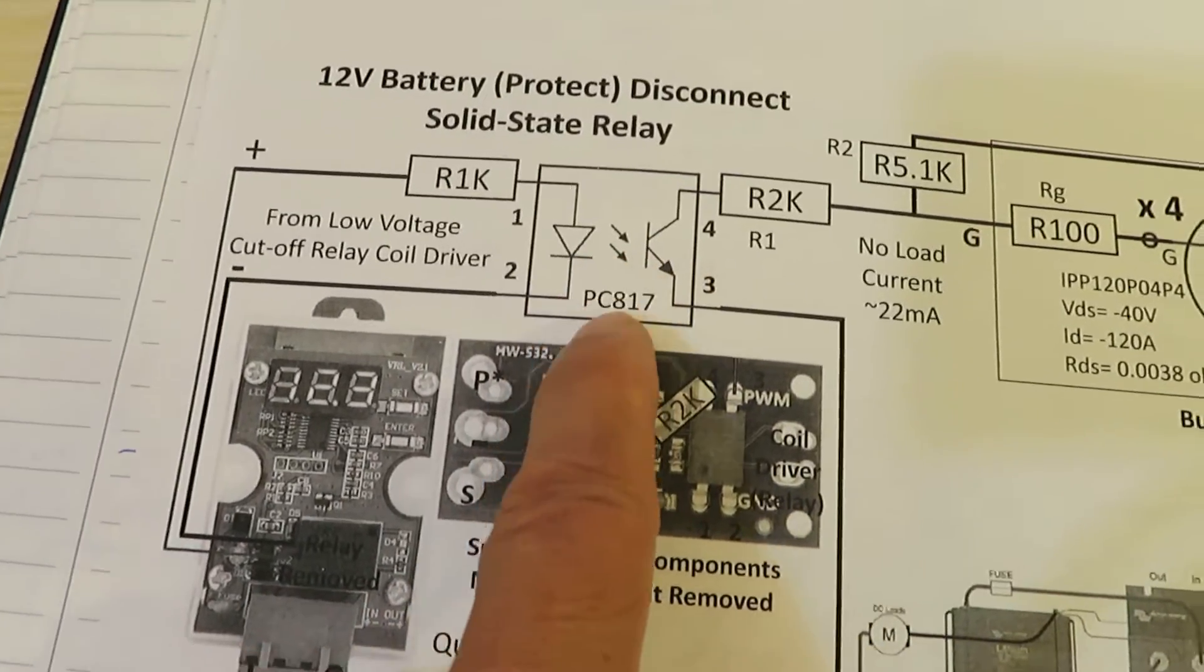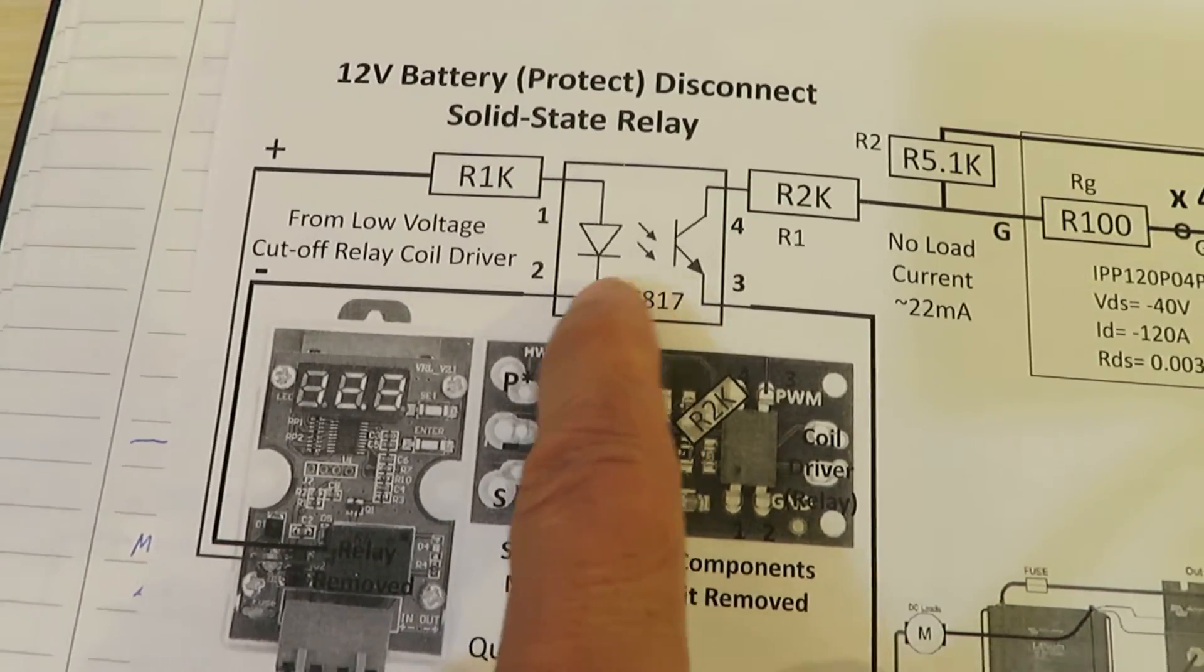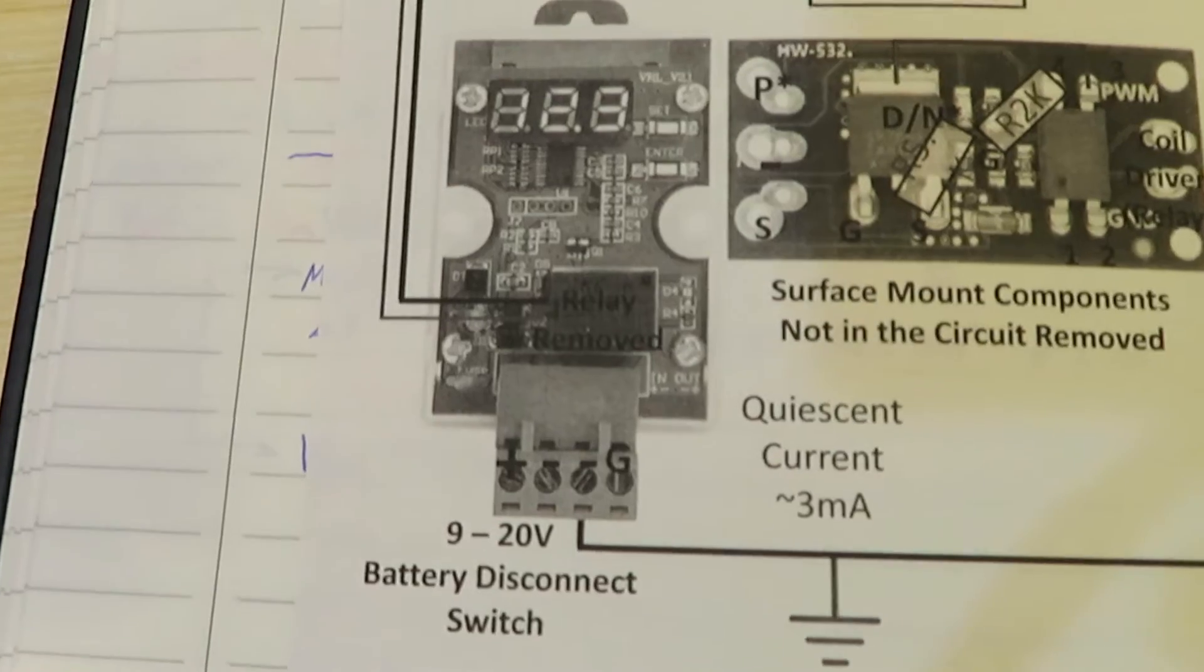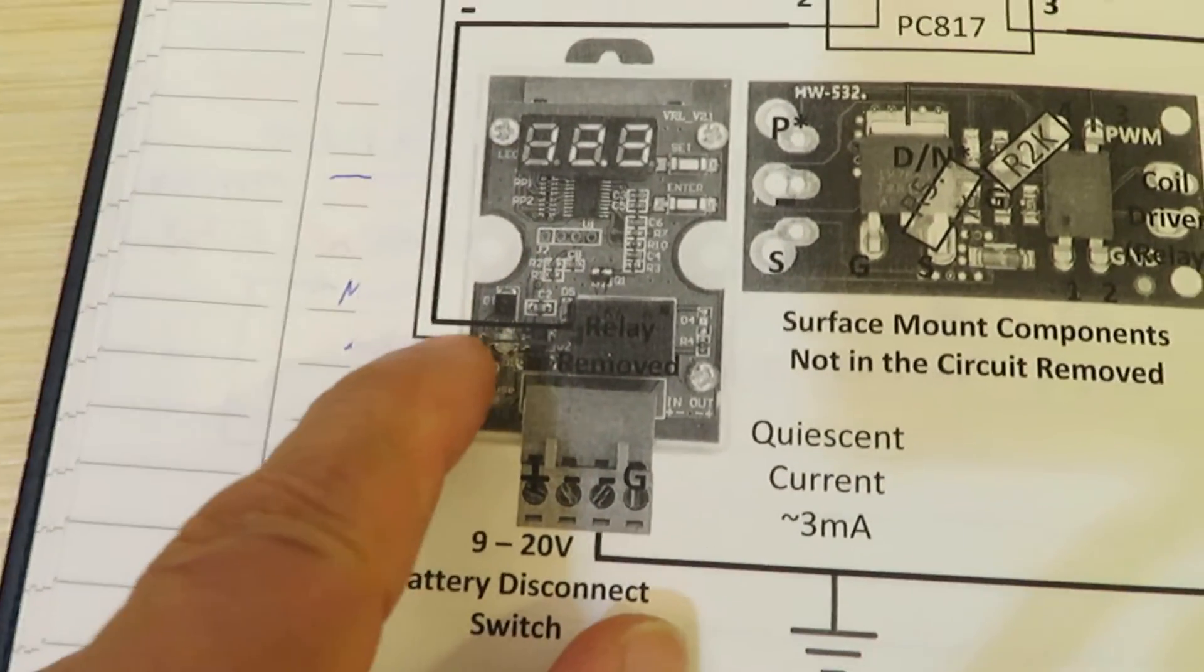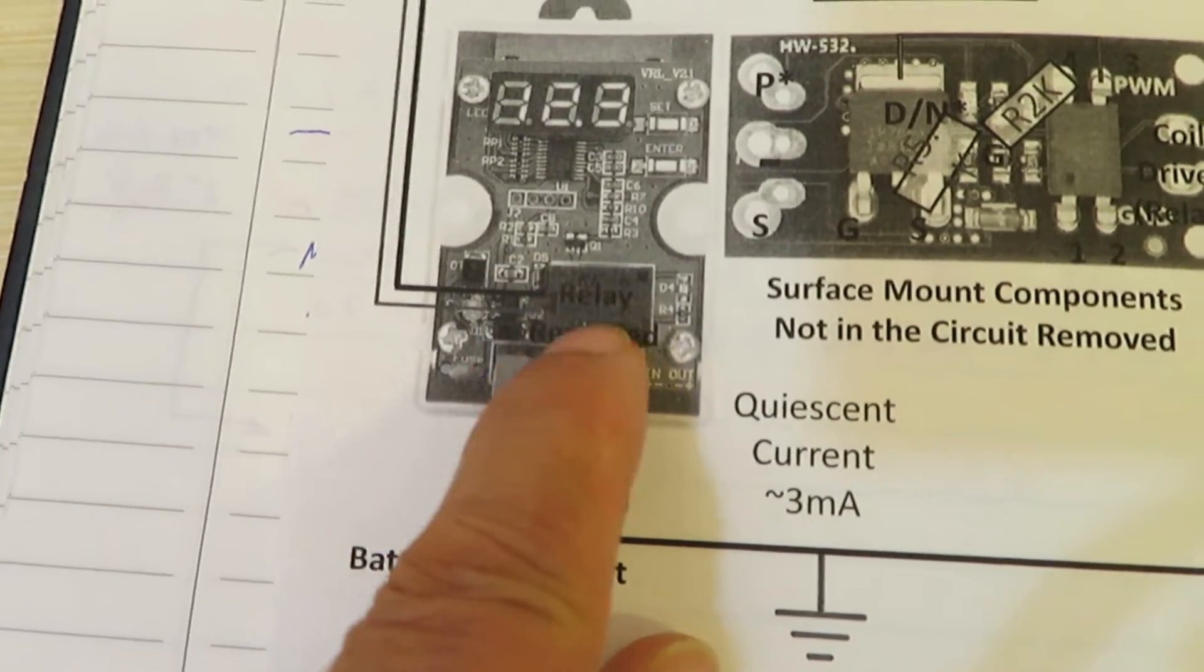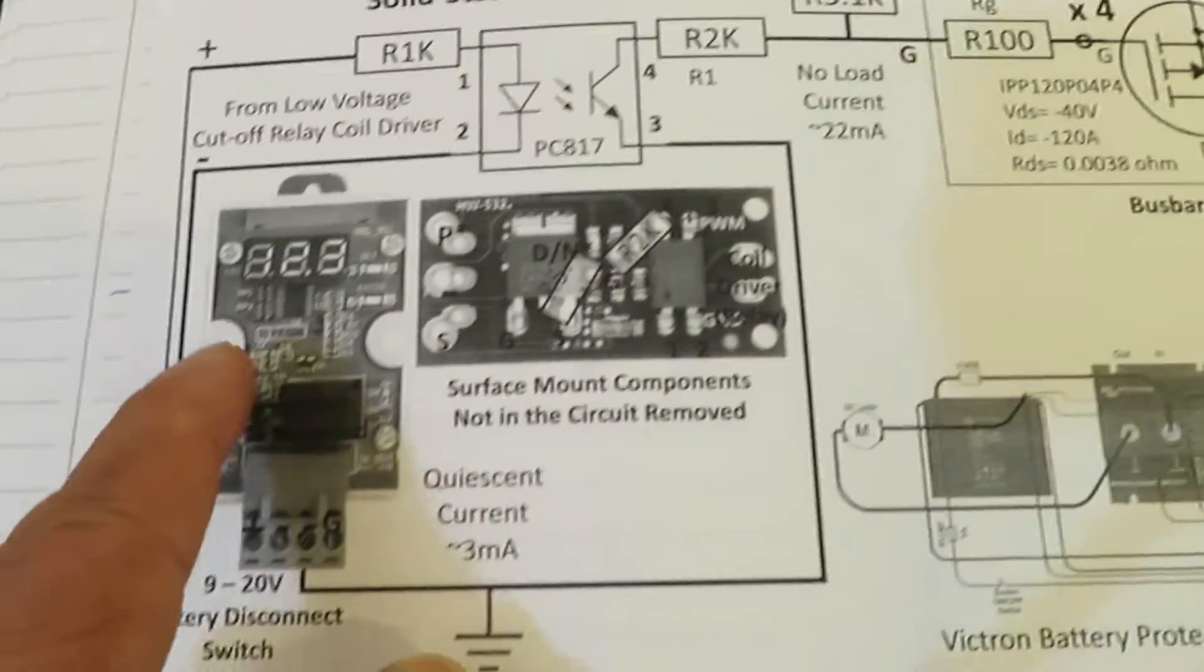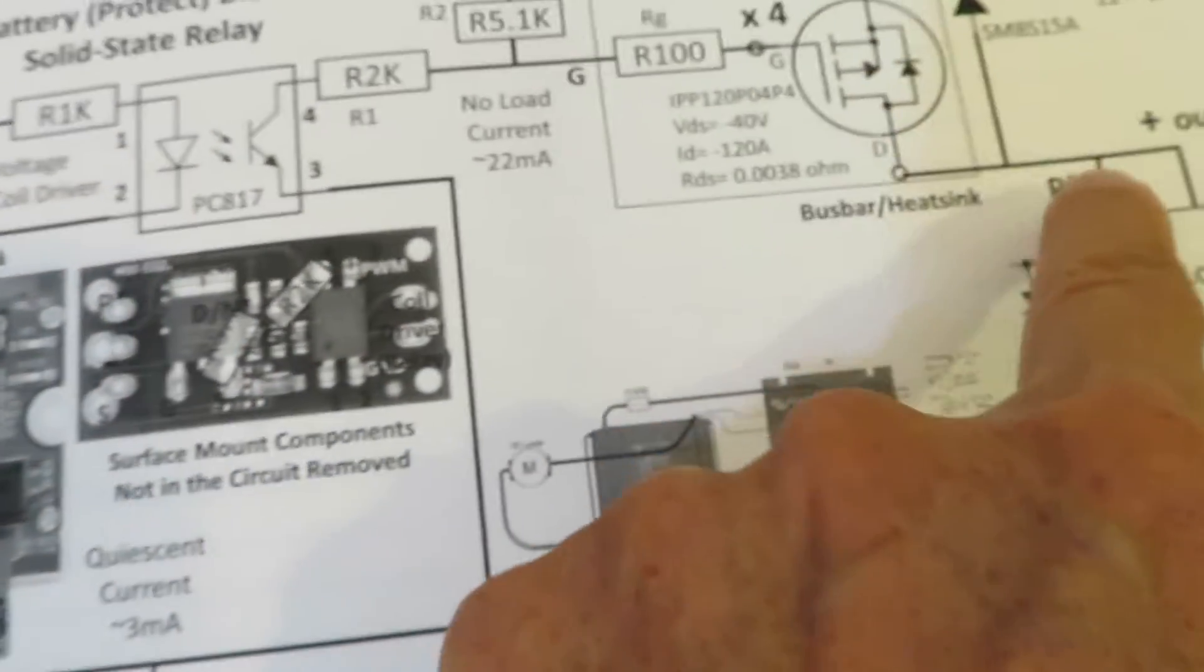And up front here is an opto coupler so the input stage and output stage are uncoupled. And I also have a programmable low voltage disconnect. This one comes with the relay but I remove the relay and use the coil to drive the solid state part. So the relay is gone and the coil drive the solid state part.